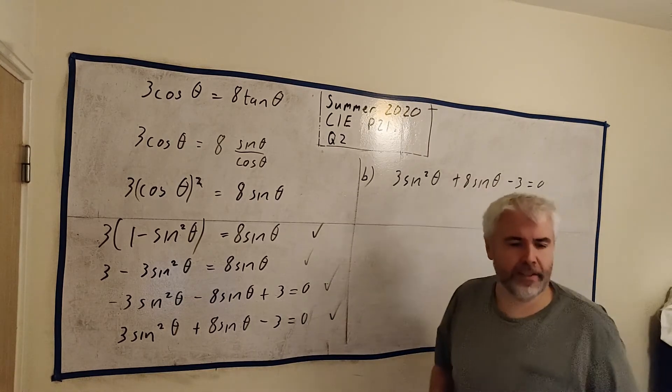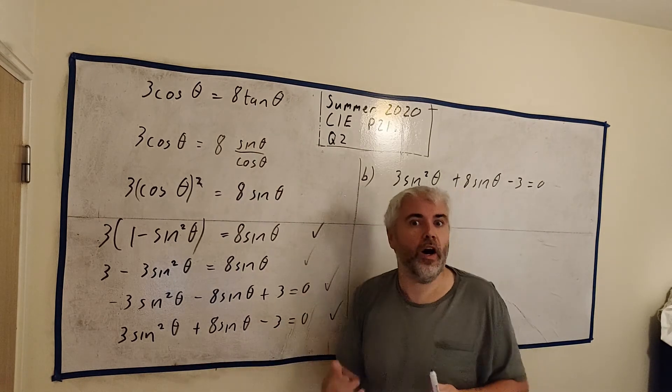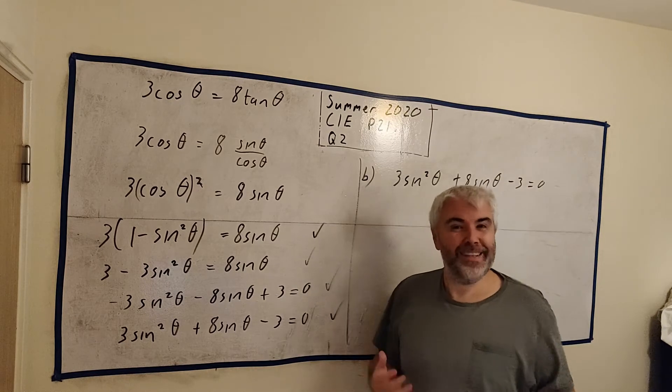Okay, part B. I've wrote this line out again because we're going to start with that. Part B asks us to find the acute angle for which 3 cosine theta equals 8 tangent theta. Well, let's not try and solve this one. Let's solve this much easier one. That's why they made us do it. Whenever they use the word hence, that's a clue that we're going to use the information from part 1.